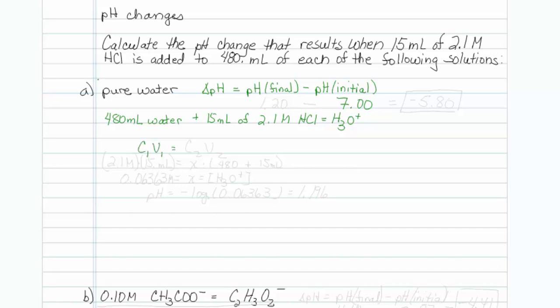C1V1 equals C2V2. Initially, we start out with 2.1 molar and 15 mL of material. We would like to know what is the concentration afterward because that will give us the hydronium concentration and be careful with your V2. It's going to be 480 mL of water and the 15 mL we started out with. So that is going to be 495 mL, very well.